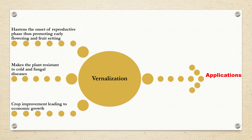Now we will come to the various applications of vernalization. As discussed earlier, vernalization hastens the onset of the reproductive phase, thus promoting early flowering and fruit setting. It also makes the plant resistant to cold temperature and fungal diseases, and finally leads to crop improvement and economic growth.